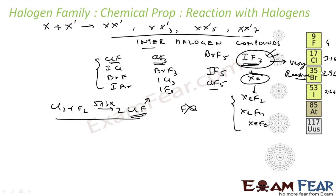The electronegativity difference between chlorine and bromine is very small — almost only 0.2 — so there is no compound containing bromine and chlorine. It's all about the electronegativity difference. Similarly, iodine and bromine have a difference of only 0.3, so you find IBr but there is no IBr3, no IBr5, and no IBr7, because the electronegativity difference is too small.